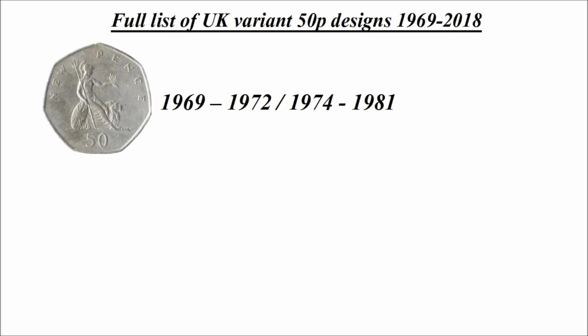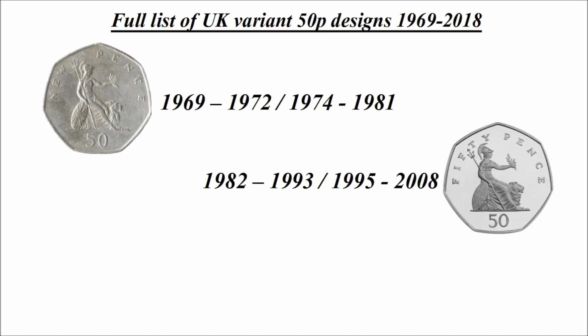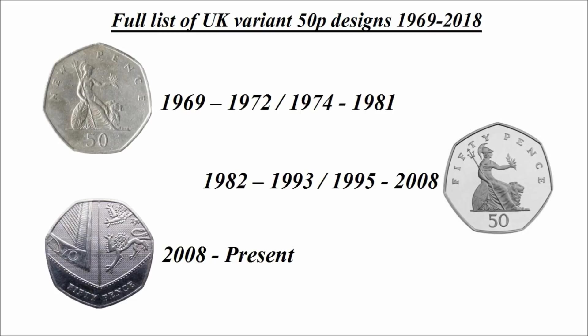To begin with, I'm going to get the main annual designs out of the way — the common designs minted year after year which you'll all be familiar with. The first design is a Britannia design with 'new pence' written along the top, running from 1969 until 1972 and again from 1974 until 1981. The second is also a Britannia design but with '50p' along the top, running from 1982 until 1993 and again from 1995 until 2008. The final design is the shield design, which ran from 2008 and is still currently being minted.